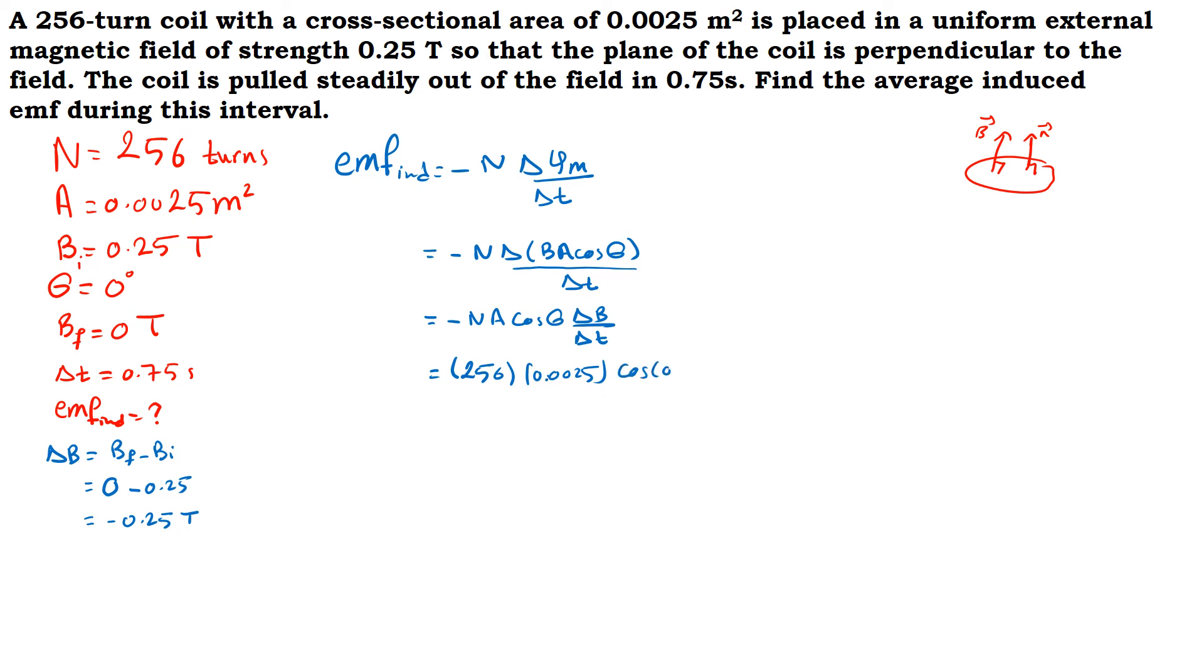We replace the values: number of turns is 256, area is 0.0025, cosine 0. Now delta B is negative 0.25 over delta t, which is 0.75.